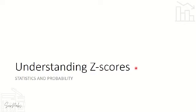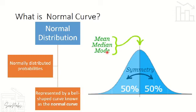Welcome back to our new video tutorial in statistics. Our lesson for this video is understanding z-scores. So what are z-scores? Z-scores are the standard score that represents how far a given score is from the mean of the given data. The z-score shows how far — how high or how low — a score is from the mean of the given normal distribution.